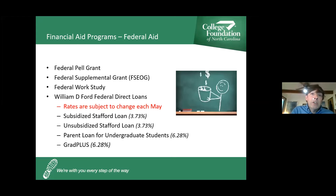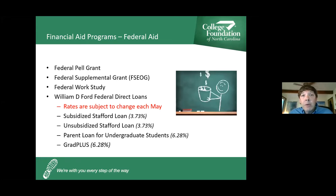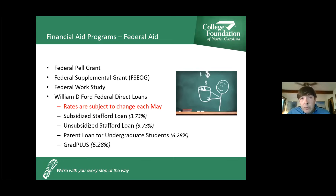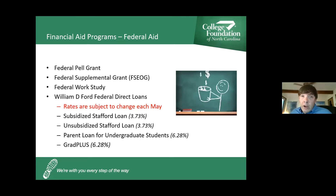Students who complete the FAFSA are also eligible for federal direct loans. There are two types: the subsidized Stafford Loan, a need-based program at 3.73% interest that does not accrue interest while the student is in college, and the unsubsidized Stafford Loan at the same interest rate, but it does accrue interest from the date of dispersal. Only borrow what you need for college-related expenses. Parent loans are also available, but the interest rate is dramatically higher, so parents, please keep retirement in mind.